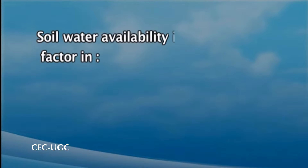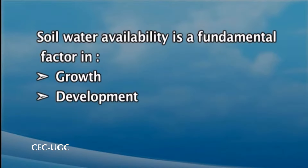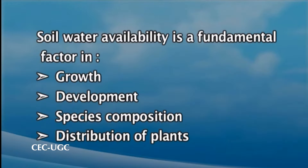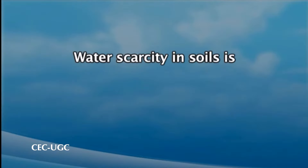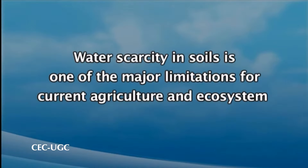Water deficit can affect plants in a number of ways. Soil water availability is a fundamental factor in growth, development, species composition and even distribution of plants. Water scarcity in soils is one of the major limitations for current agricultural and ecosystem productivity.